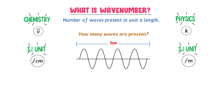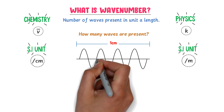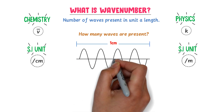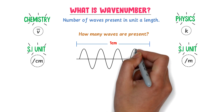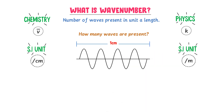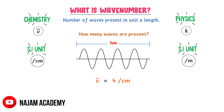Wave number shows how many waves are present in one centimeter length. This is one wave, this is the second wave, this is the third wave, and this is the fourth wave. So there are four waves present in one centimeter length, and its wave number is equal to four waves per centimeter. Thus, wave number is the number of waves present in one centimeter length.